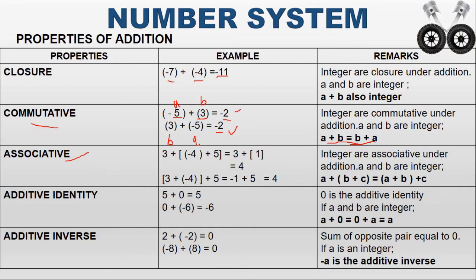The next property is associativity. What is associativity? If A, B, C are integers, then A plus (B plus C) equals (A plus B) plus C — we are interchanging the brackets. Taking A as 3, B as minus 4, and C as 5: for A plus (B plus C), the bracket is executed first. Inside the bracket, minus 4 plus 5 — these have different signs, so we subtract: the answer is 1. Then 3 plus 1 equals 4.